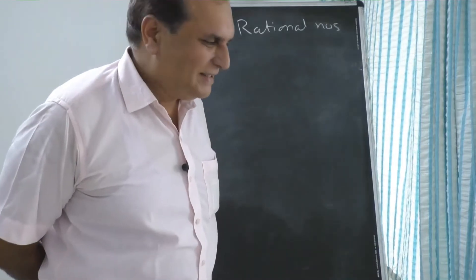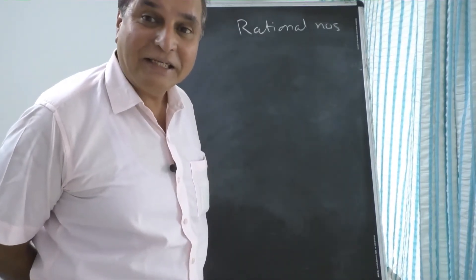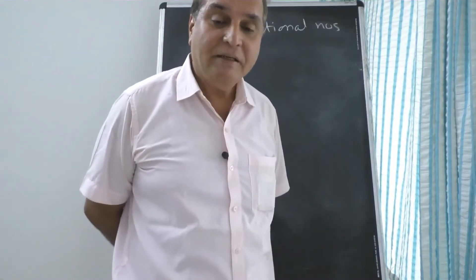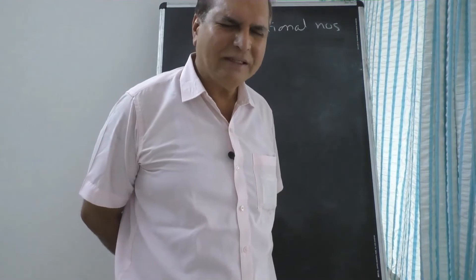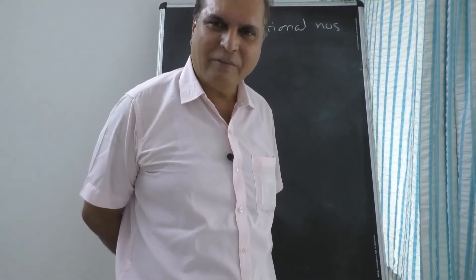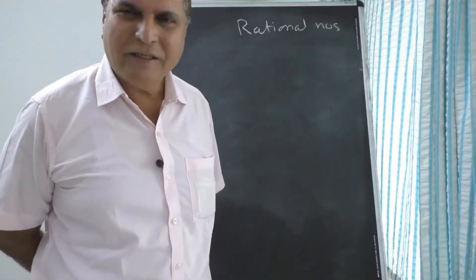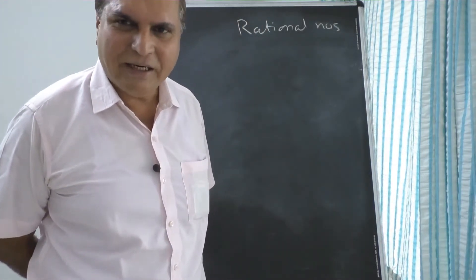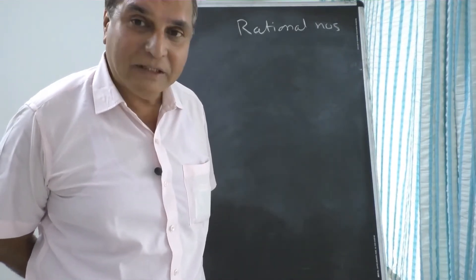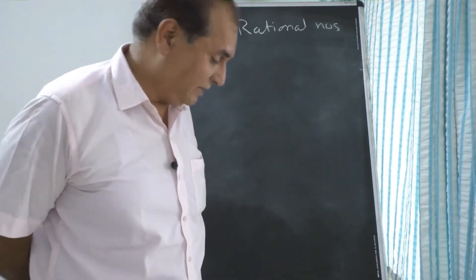Hello students, today we are going to deal with the important chapter Rational Numbers. Rational Numbers means mostly we are talking about numbers like 2 upon 3, 5 upon 7, 3 upon 11 — not Decimal Fractions. Decimal Fraction is easy to add and subtract, just point below point. These are Rational Numbers in the form of P upon Q. You know the definition of Rational Numbers.